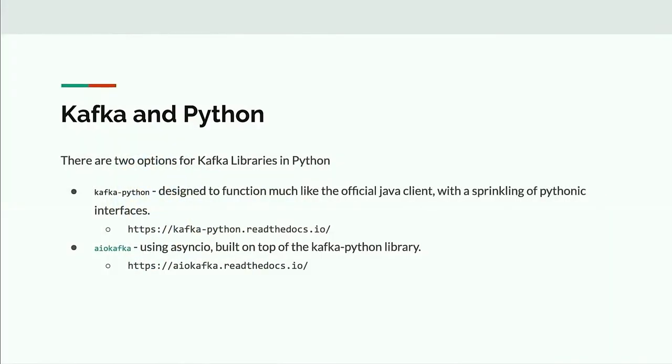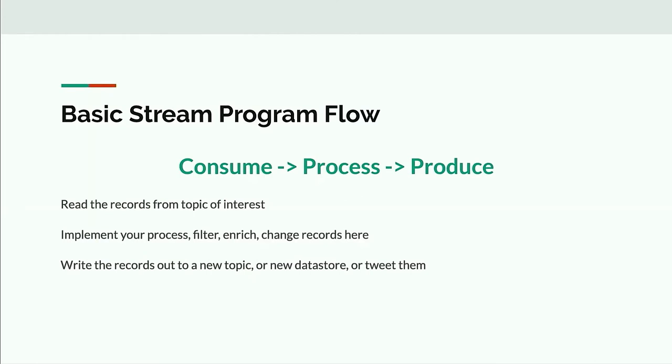There are two major options for Kafka libraries in Python: Kafka-Python, which looks and behaves like the standard Kafka client and is a little Pythonic; and then there's an async client which gives faster IO, but you have to be careful not to block your IO in your loops. Basically we have this consume-process-produce loop: you read some records, process them, do something with them. If you're reading from and writing to Kafka: consume, process, produce.